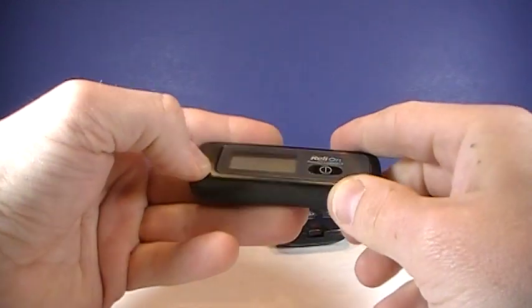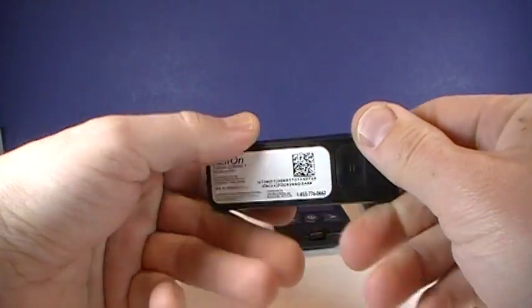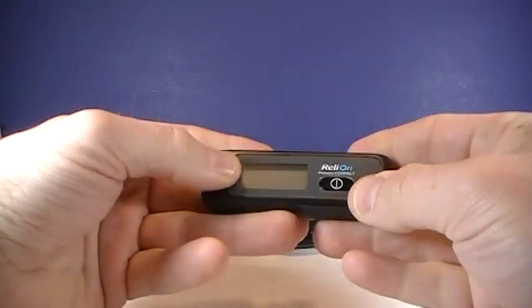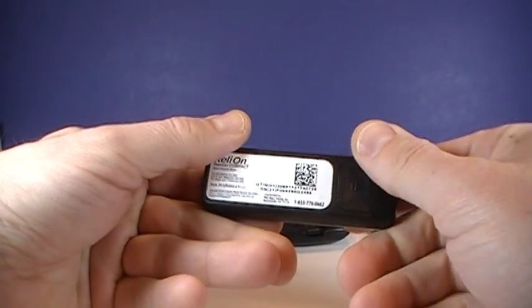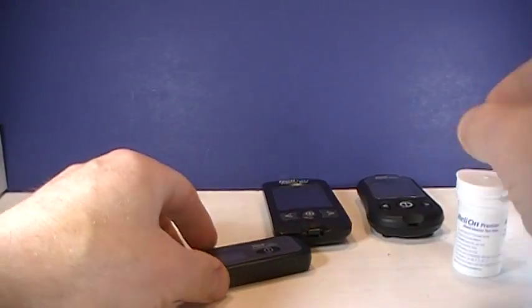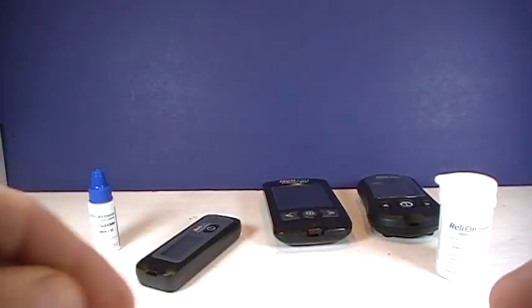The Compact is the cheapest of them and it has the fewest functions. It only saves 10 readings. It doesn't have time or anything in there. So that is the simplest, easiest one to use. We'll just run through how to do the control solution on all three meters.